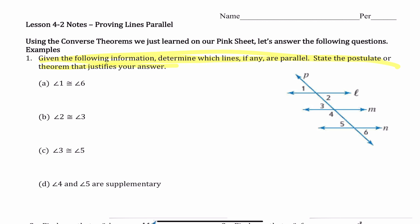Stop the video, watch that, and then come back. Alright, let's take a look at 1A. Angle 1 is congruent to angle 6. We can assume that angle 1 is congruent to angle 6 because it says right here.